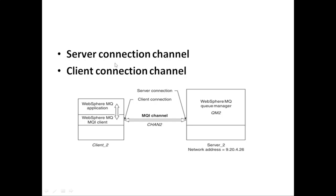So that's the basic definition: the server connection channel is at the server end and the client connection channel is at the client end. This is a bidirectional channel, and the channel name must be the same on both sides. The connection configuration includes the IP address — the server connection channel holds the client's IP address and the client connection channel holds the server's IP address, so that either side can connect. If anyone asks how to connect with a client, you can say: using a server connection channel and a client connection channel.